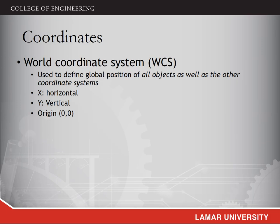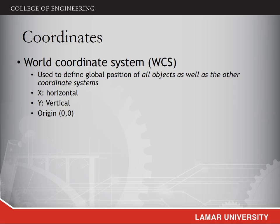The world coordinate system is used to define the global locations of all objects in the design. The system has only one origin, (0,0), and it cannot be modified. Also, it uses the x-axis to represent horizontal directions, and the y-axis to define vertical directions.